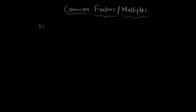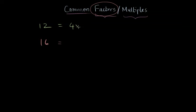Let's say we have two numbers, 12 and 16. What are factors? A factor is any number that completely divides the given number. So here, 4 completely divides 12 because I can write 12 as 4 times 3. The other factor is 3 because 3 also completely divides 12. Whenever you can write a number as a multiplication of two numbers, both of those numbers are factors.